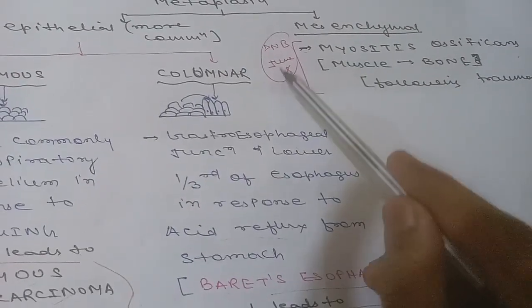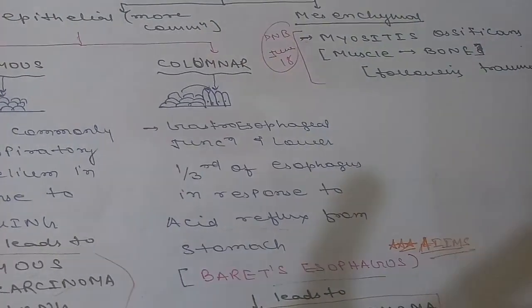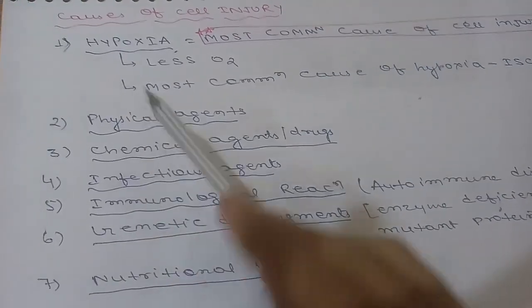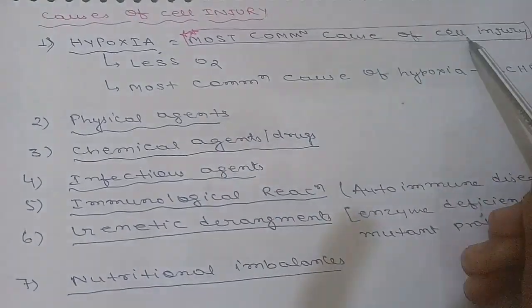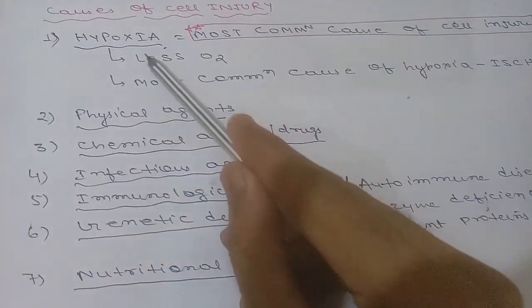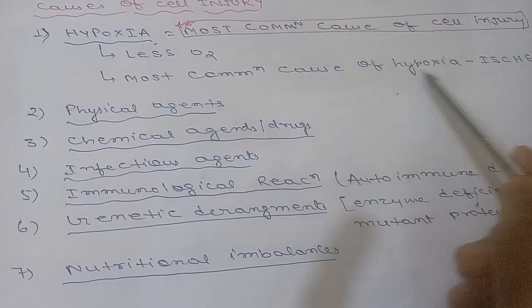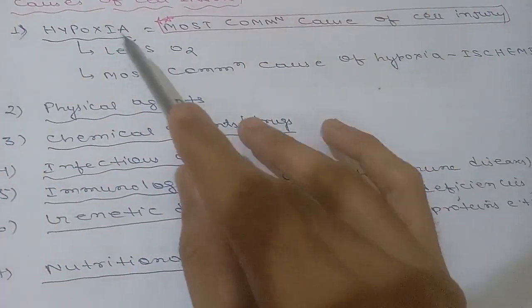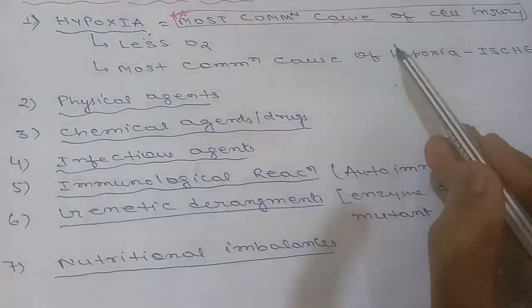Mesenchymal metaplasia is seen in myositis ossificans, where muscle converts to bone following trauma. Now, the causes of cell injury: hypoxia is the most common cause of cell injury, and the most common cause of hypoxia is ischemia.